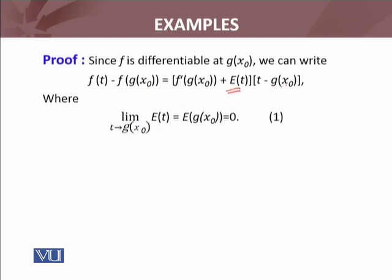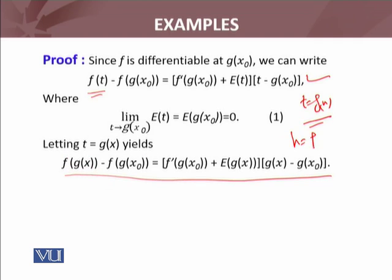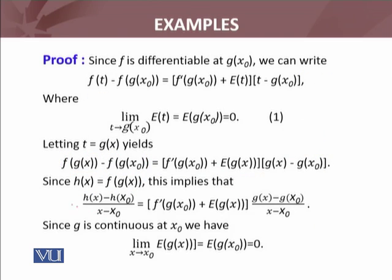When t approaches g(x₀), e(t) limit exists and equals zero — so e(g(x₀)) is also zero. Letting t = g(x), the formula obtained from the lemma transforms accordingly. Remembering that h = f ∘ g is the composition we defined, this becomes h(x), and the other side becomes h(x₀). So this gives h(x) − h(x₀), divided by g(x) − g(x₀), whose limit we will investigate.